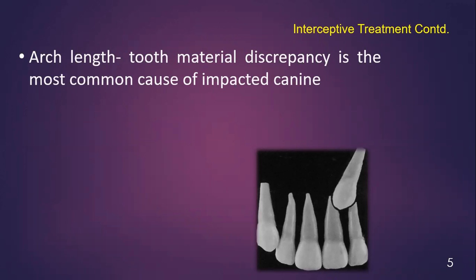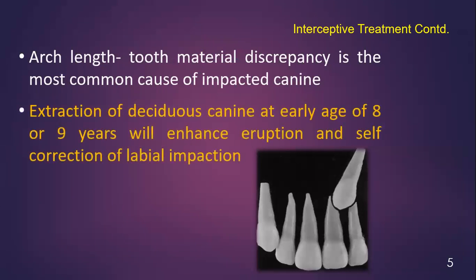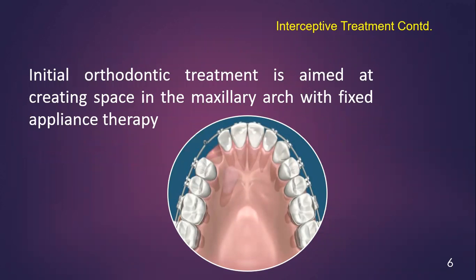The discrepancy between the arch length and the mesiodistal dimension of the tooth arch is the most common cause of impacted maxillary canine. Therefore, when clinicians suspect a chance of impacted maxillary canine, removal of the deciduous canine at the age of 8 or 9 years will enhance eruption and self-correction. The initial orthodontic treatment aim is to create space for the impacted canine, and sometimes removal of the premolar is also indicated.